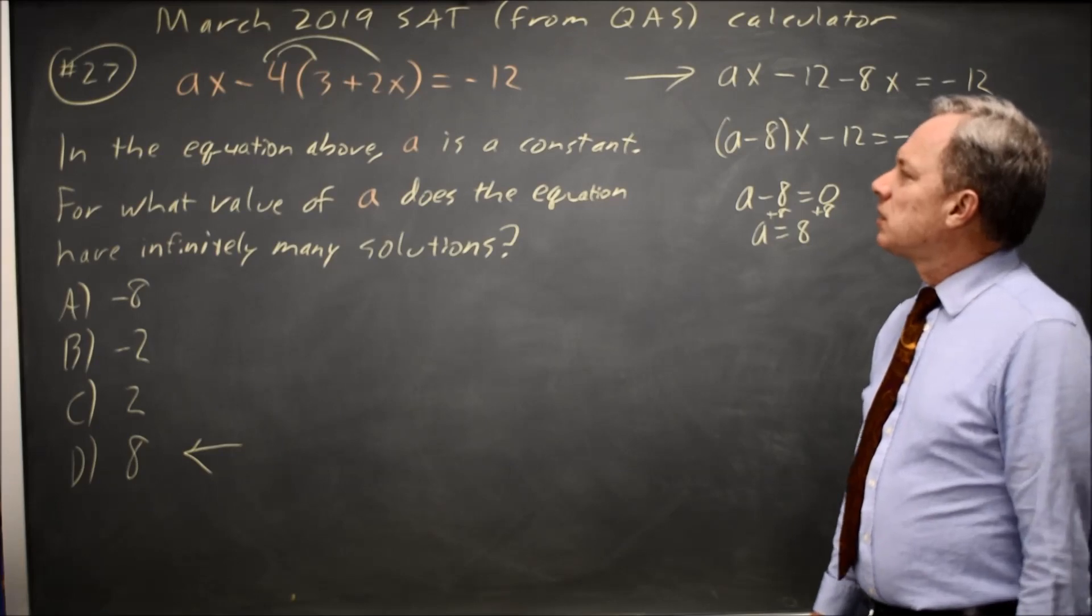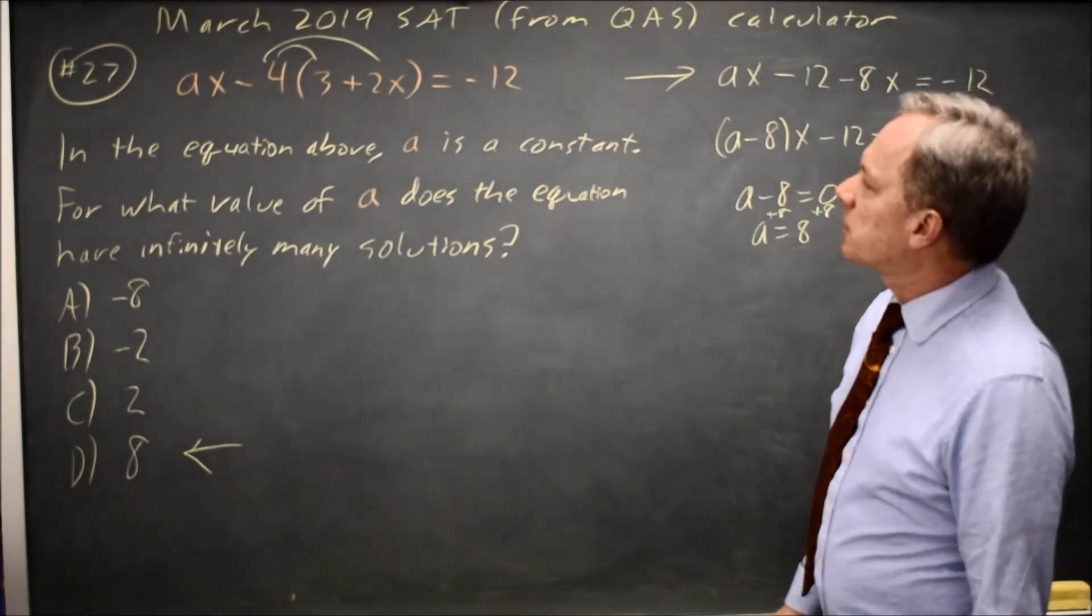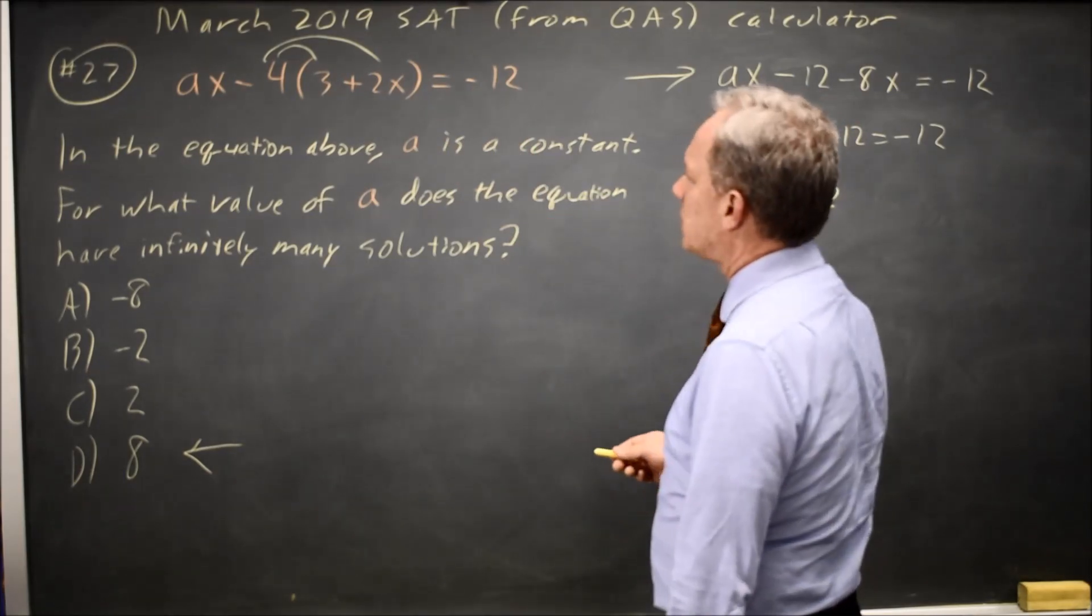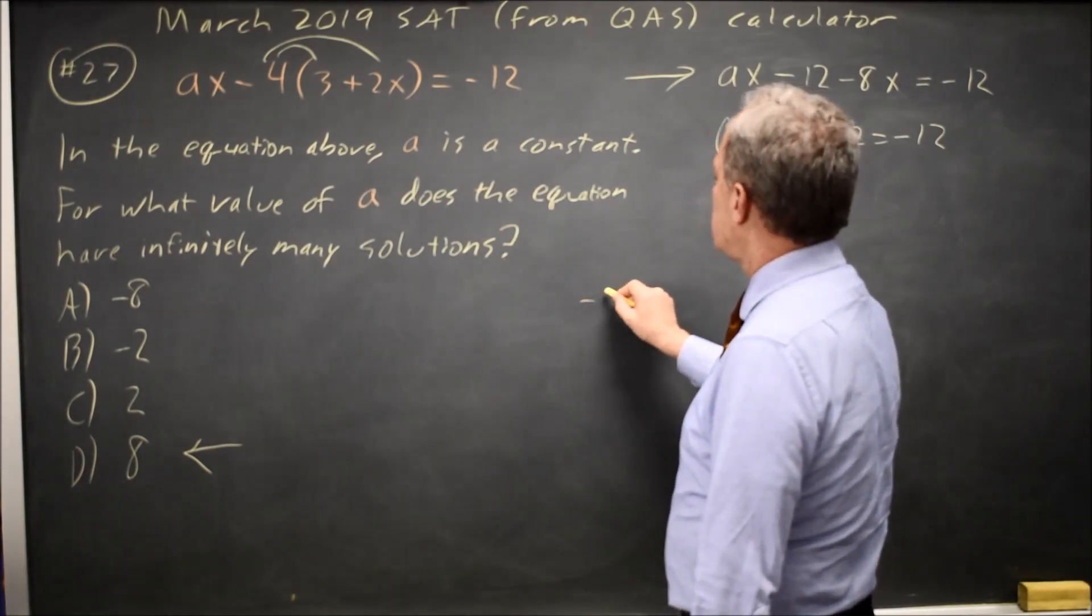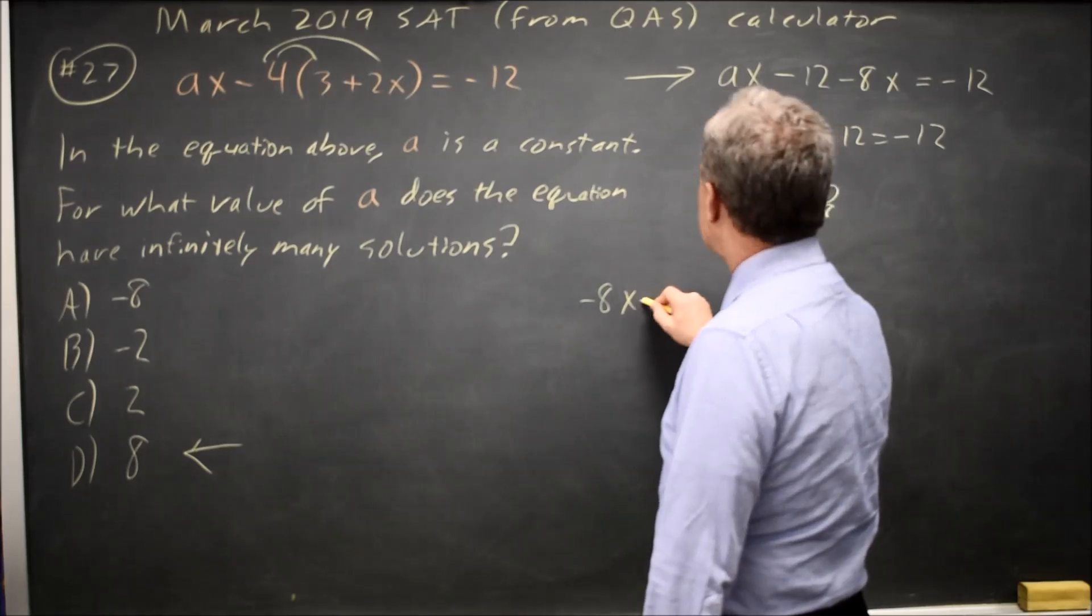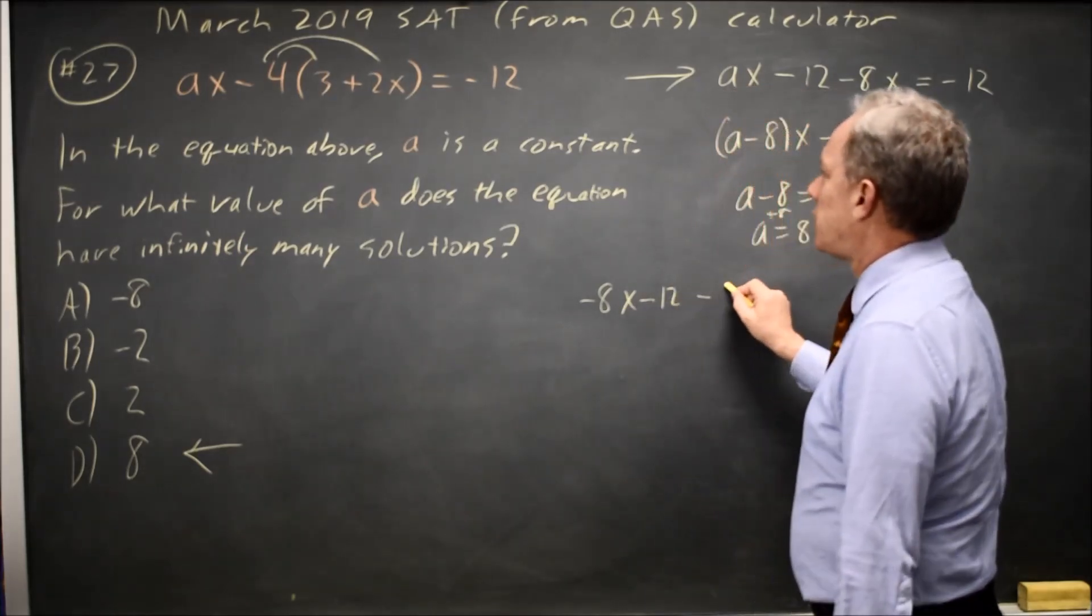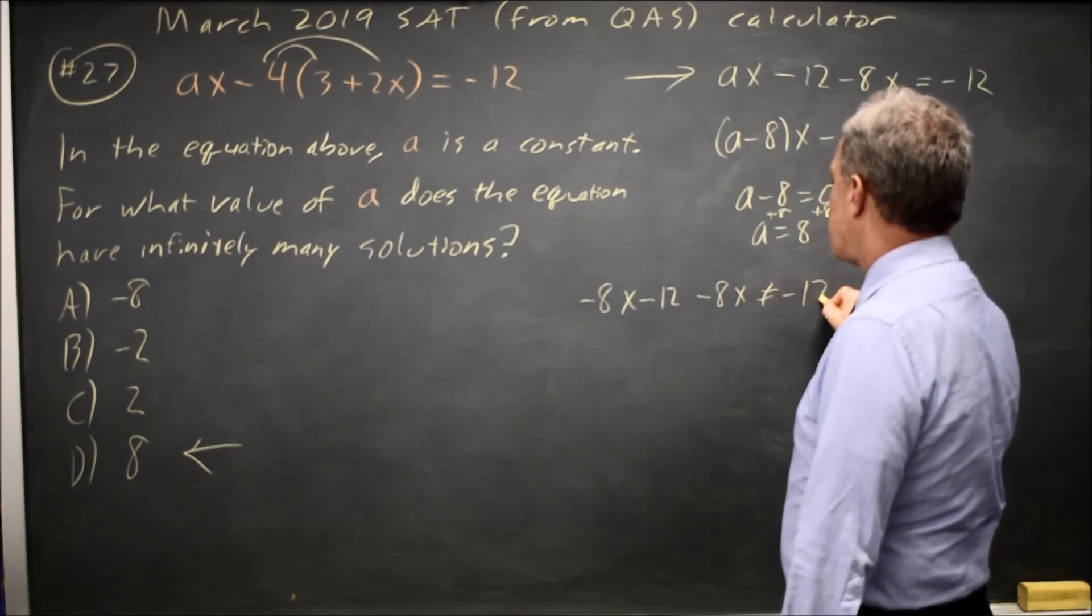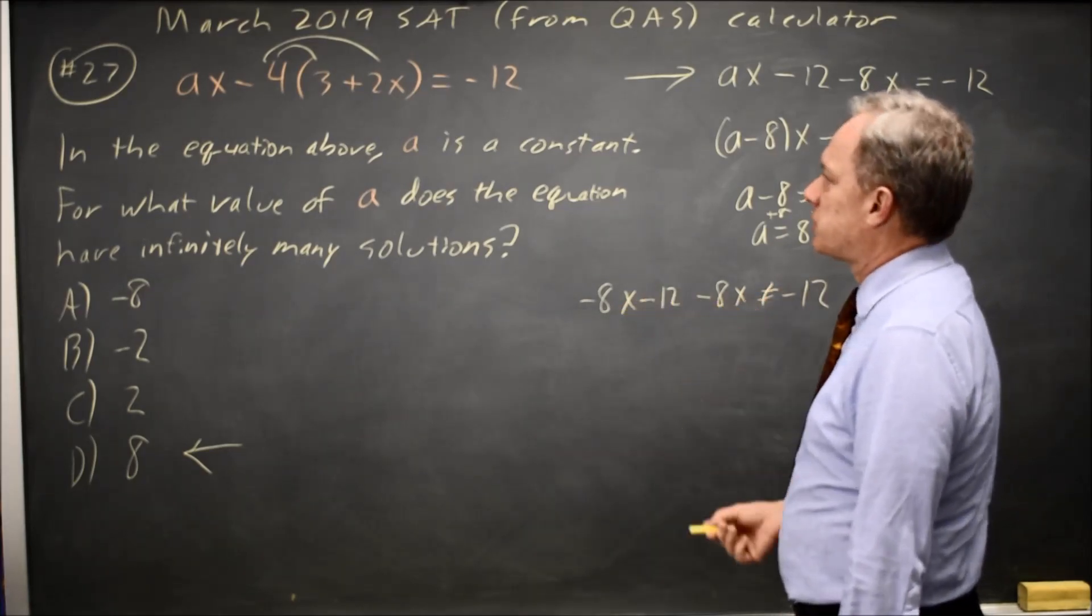Alternatively, I could substitute in the answer choices and see if this left-hand side simplifies to negative 12. So trying choice A, negative 8X minus 12 minus 8X is not equal to negative 12, because this is negative 16X minus 12.